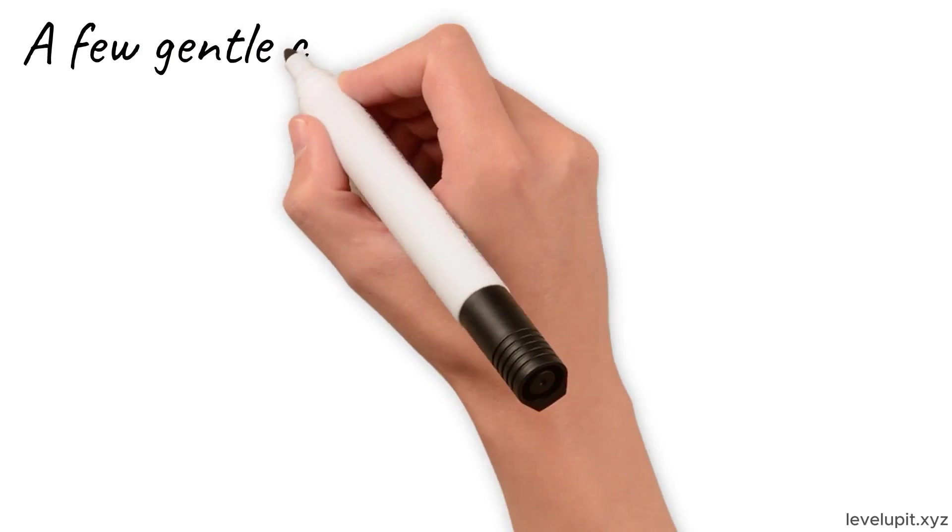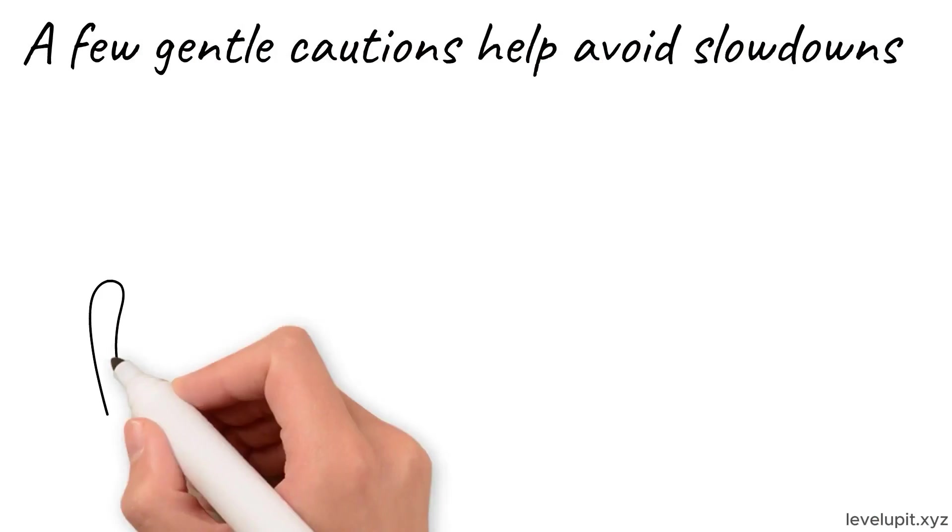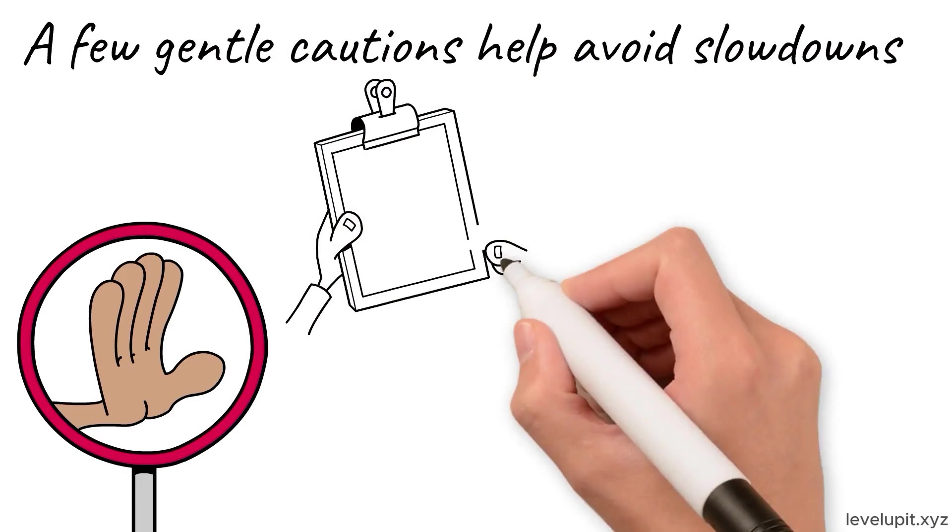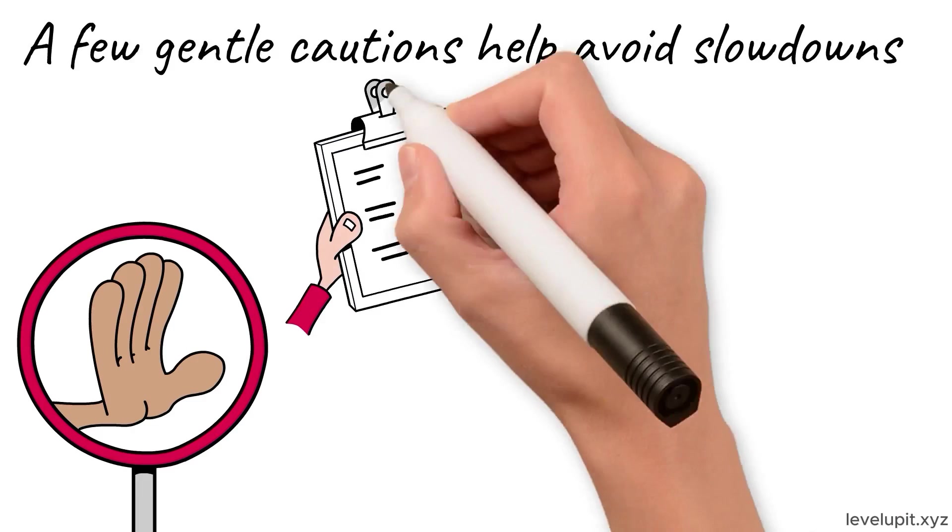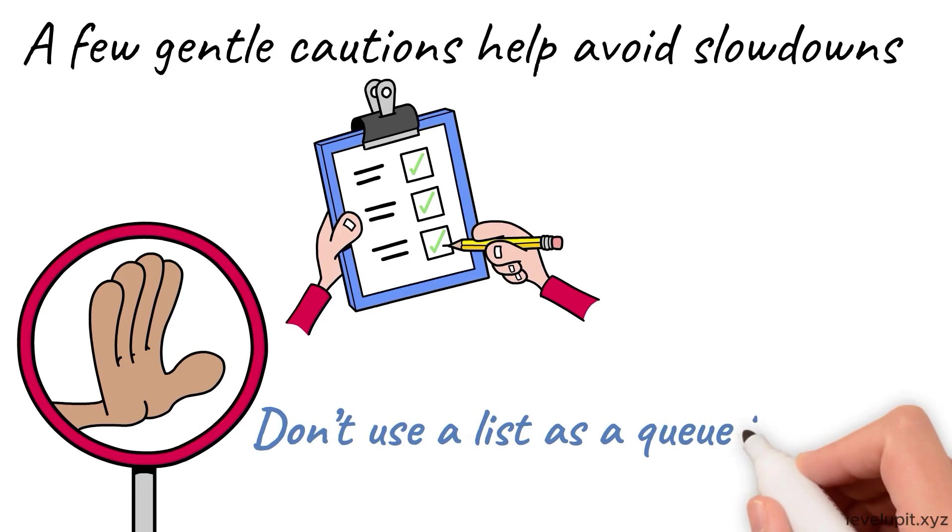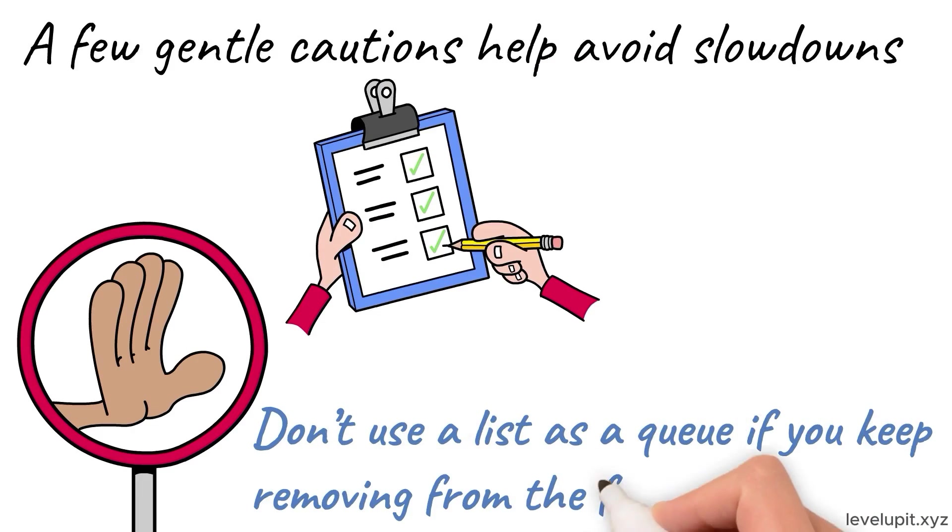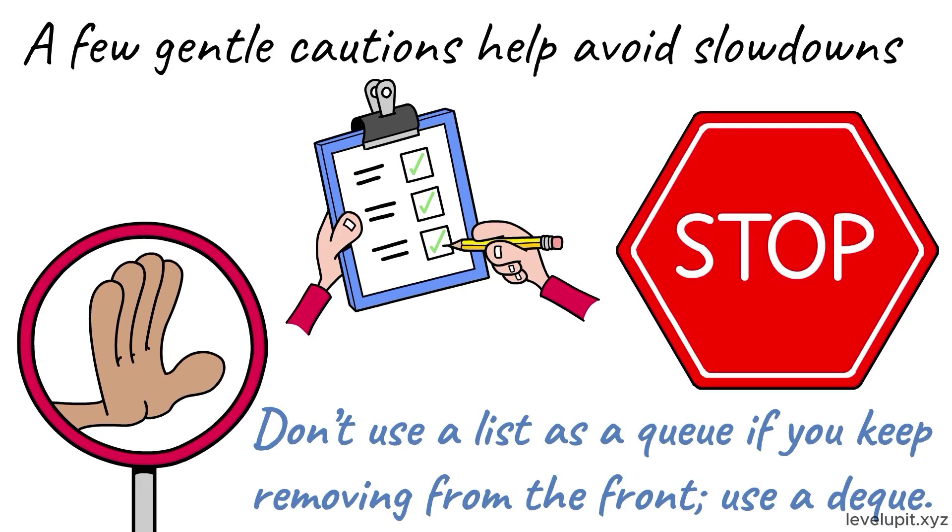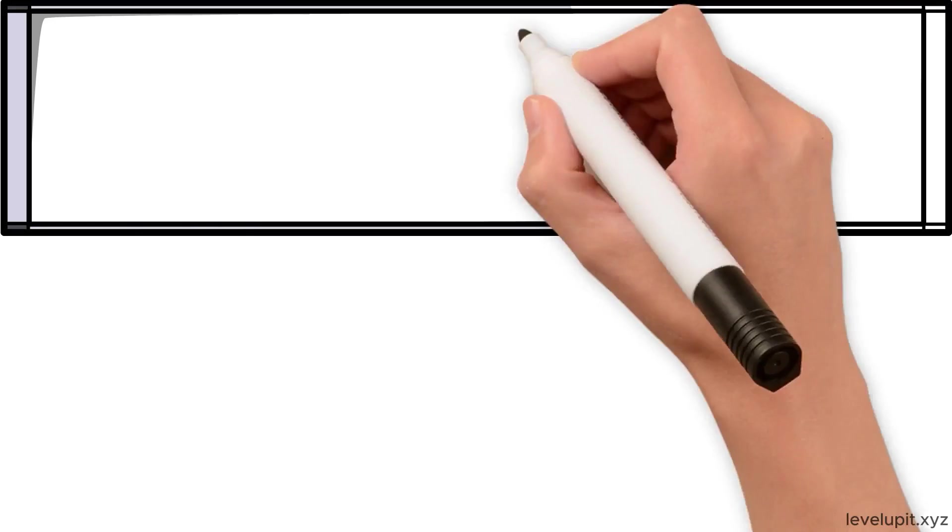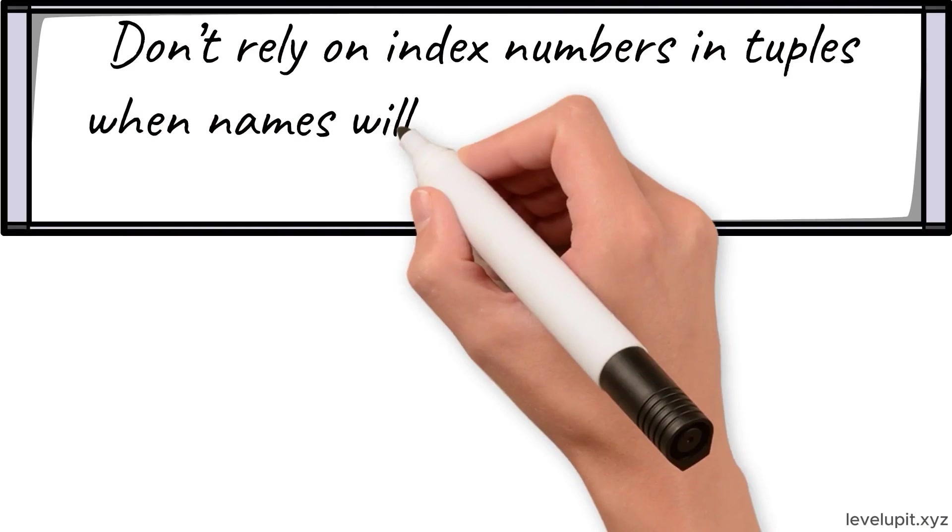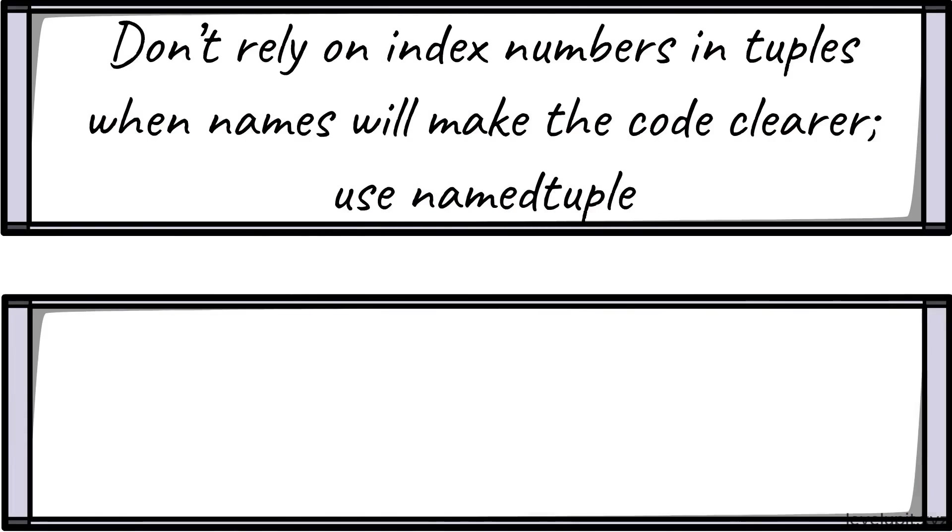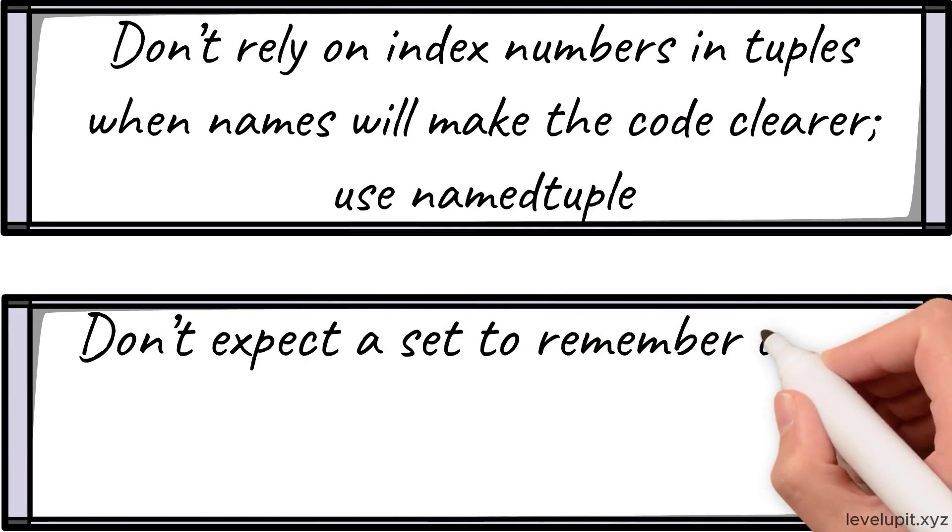Use OrderedDict when order is part of the logic. Use ChainMap when values live in layers. A few gentle cautions help avoid slowdowns. Don't check membership in a growing list; use a set so checks stay fast. Don't use a list as a queue if you keep removing from the front; use a deque. Don't write 'if key not in dict' blocks for grouping and counting; use defaultdict. Don't rely on index numbers in tuples when names will make the code clearer; use namedtuple. And don't expect a set to remember order.